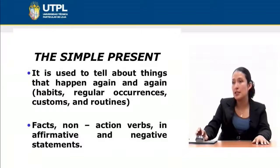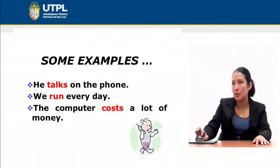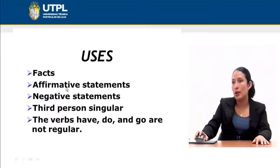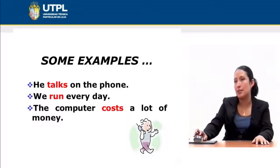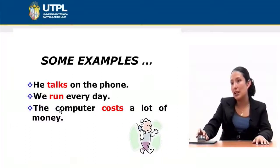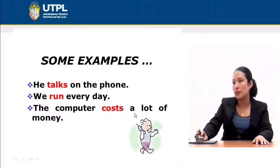The simple present tense is also used to tell about facts and non-action verbs in affirmative and negative statements. For example: 'He talks on the phone' — notice that you use an S at the end of the verb because it represents the present tense. 'We run every day' — no S is needed because 'we' is plural, not third person. 'The computer costs a lot of money' — S is added because 'the computer' is third person singular.